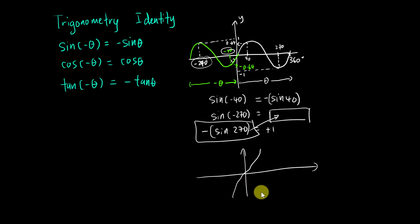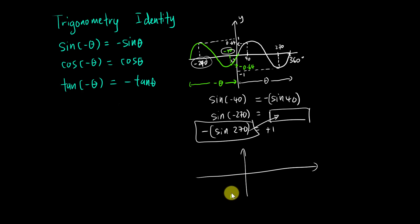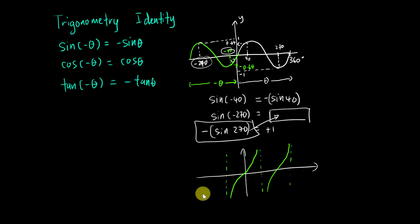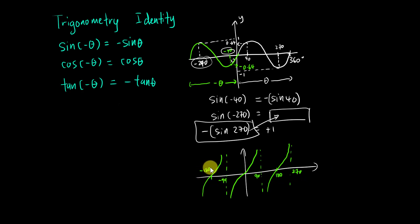Now, the tangent graph looks like this — it keeps on continuously repeating. This point is 90 degrees, this is 180, this is 270, and on the negative side this is negative 90, negative 180, and so on.